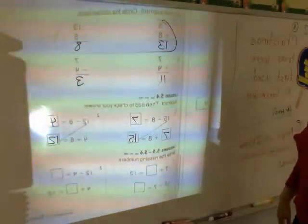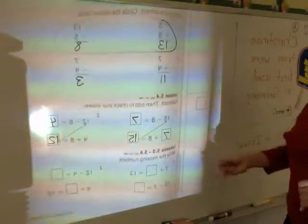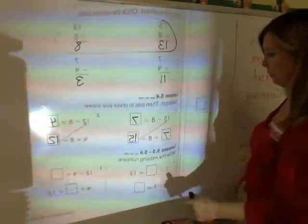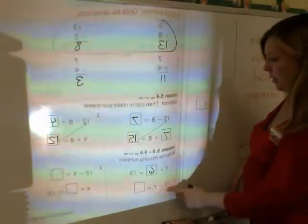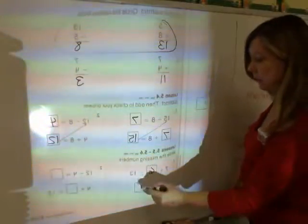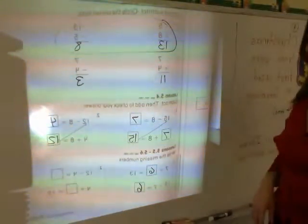Write the missing numbers. This is related facts, addition and subtraction. 7 plus 6 is 13. 13 minus 7, then, since it's a related fact, that's also going to be 6.